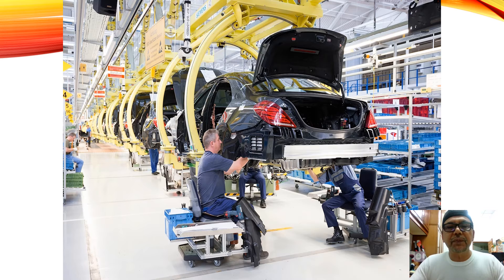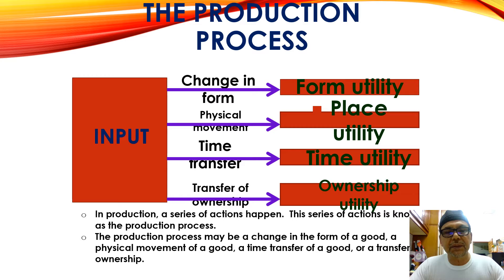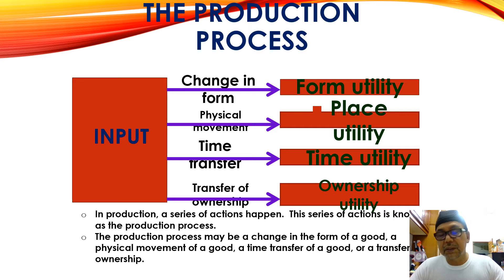You can see the example of production of a car. In the production, a series of actions happen — a series of actions known as the production process. The production process may change the form of the goods, the physical movement of the goods, the time to transfer the goods, and the transfer of ownership. So we change the form of the goods, put raw material into the machine, then it needs time to transfer, then to the finished product and to the ownership of the utility — as shown in the simple example of the car production process.